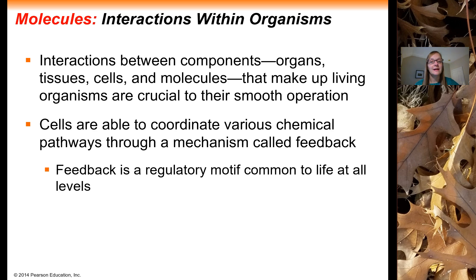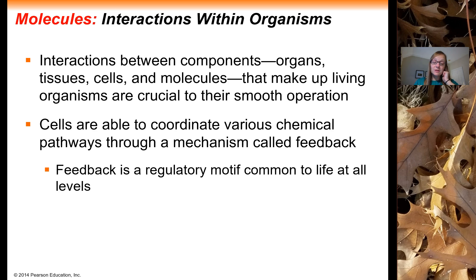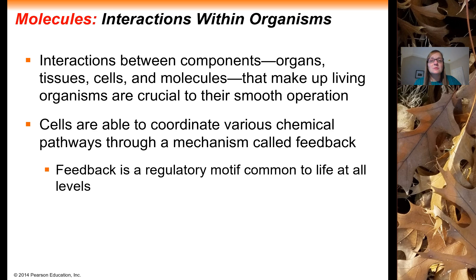Let's go to the opposite end of the spectrum and talk about interactions on the small scale that happen within an organism. You're going to have interactions between various components of a system. Organs have to interact with each other. Tissues within an organ have to interact with each other. Cells within tissues have to talk to each other; otherwise they're not going to be able to perform their job as a congruent tissue. And molecules within the cells are really where a lot of the regulation comes from. The way that cells communicate is by coordinating various chemical pathways — one chemical is produced, it bumps into another chemical, that chemical bumps into another one, and all along the line you're going to have some sort of effect taking place within the cell.